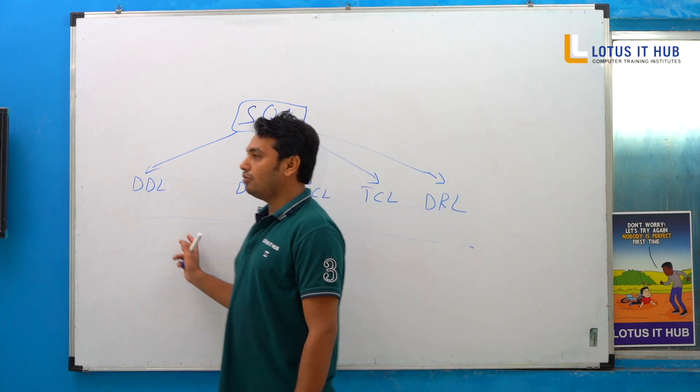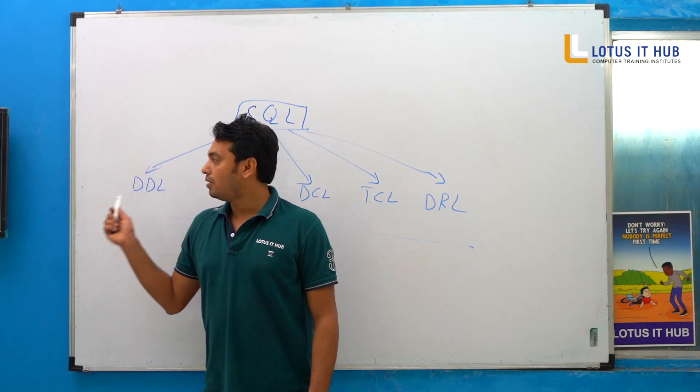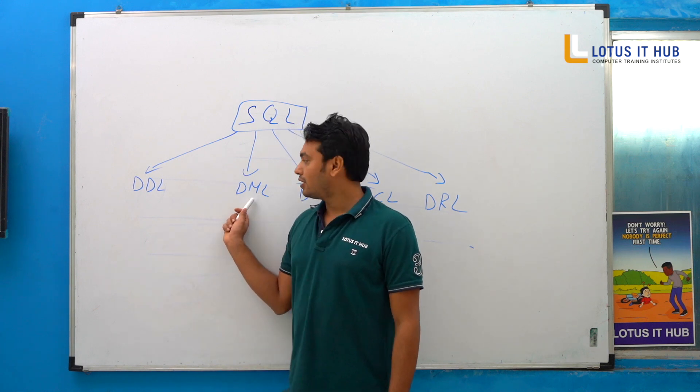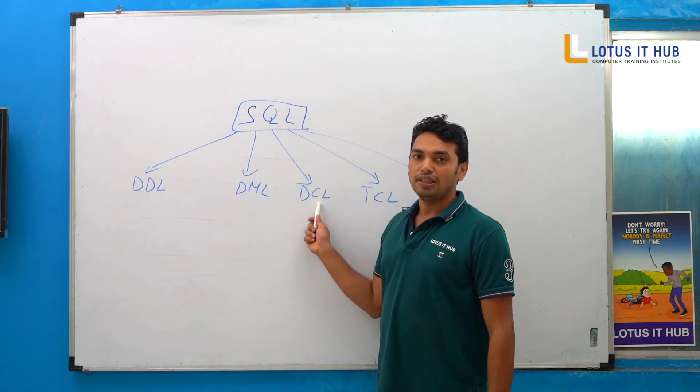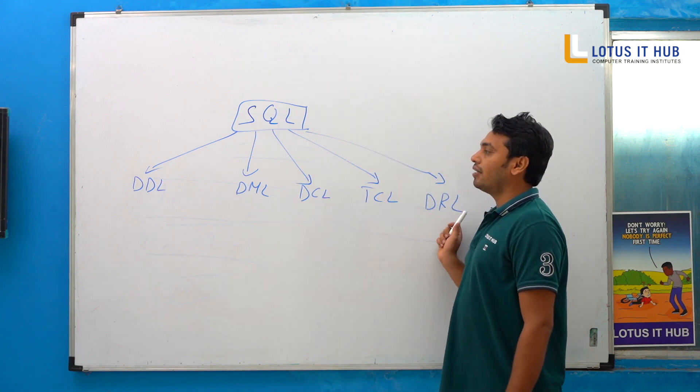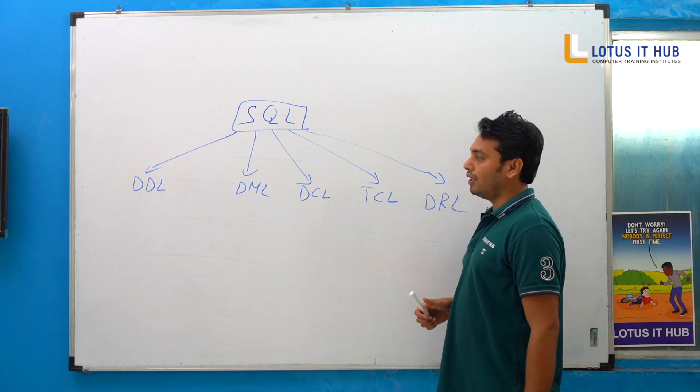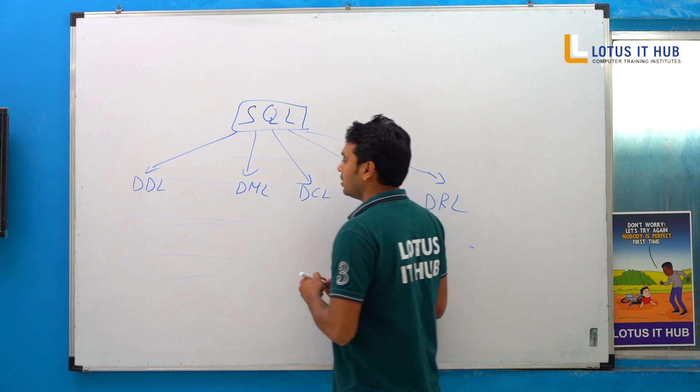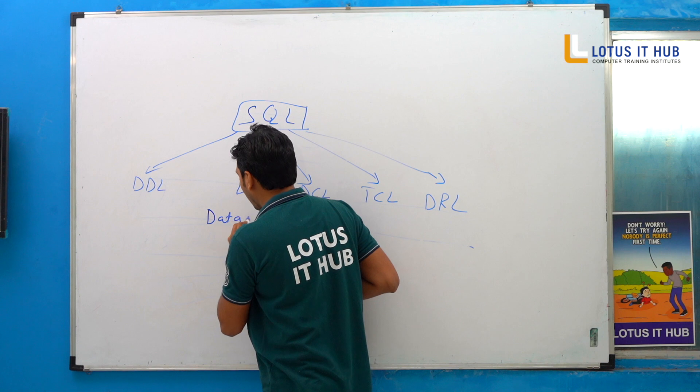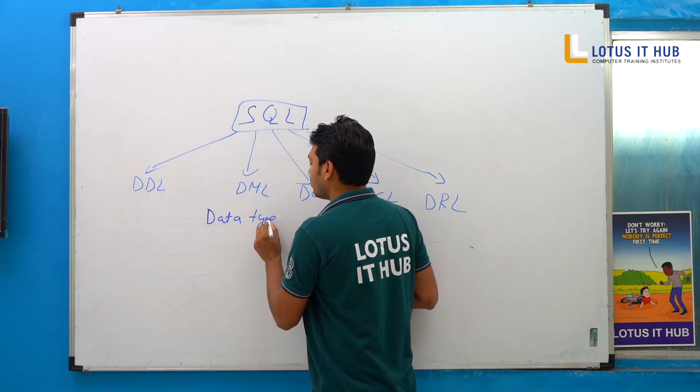You can note it down. The full form of DDL is Data Definition Language, DML is Data Manipulation Language, DCL is Data Control Language, TCL is Transaction Control Language, and DRL is Data Retrieval Language. These things we mostly discuss in SQL. Most important questions in your SQL: how to use data type, and how many data types are sufficient to learn SQL.